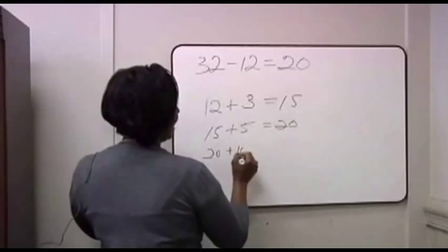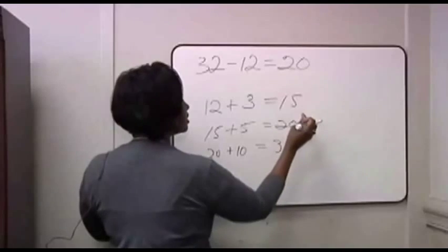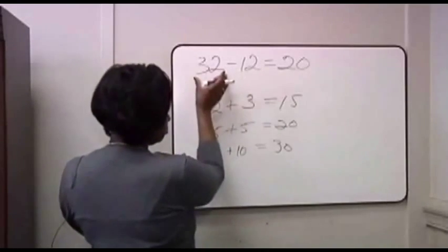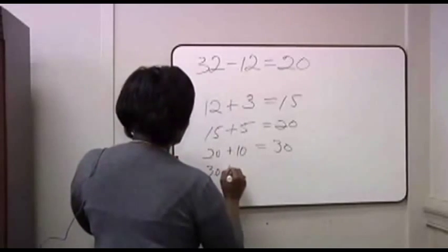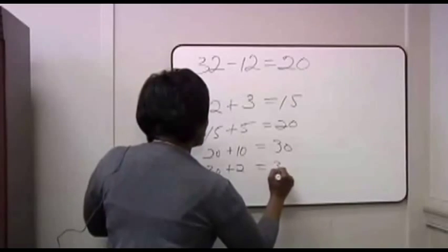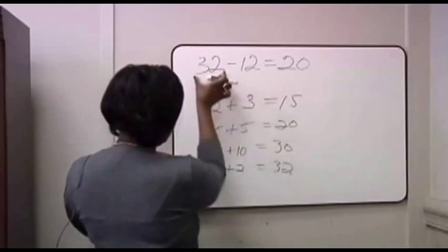Then you take the 20 and you might add a 10 to it, getting 30 because it's easier to add 10 to 20 real quick. You're close to your starting number. So you then take 30, add a 2, which is what's left. It's all you got left. And now you have 32. You're back to what you started with.